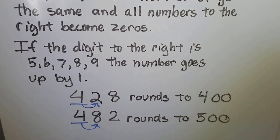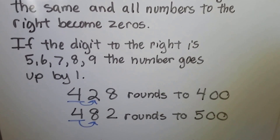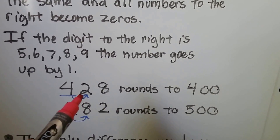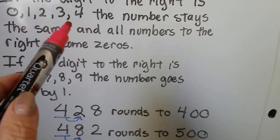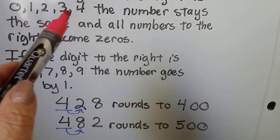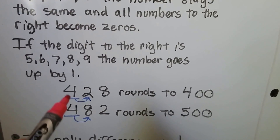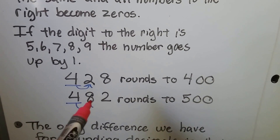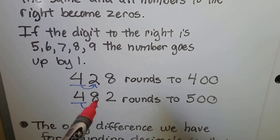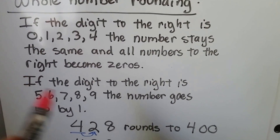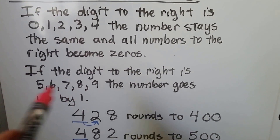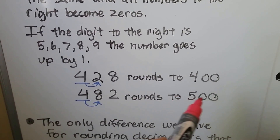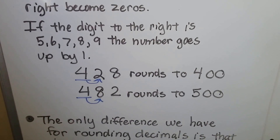So we have 428. If we're rounding to the hundreds place, the 2 is telling the 4 to stay the same, because it falls in that category. So it rounds to 400. In this case, the 8 is in the next group, so it's going to tell it to go up by 1. So the 4 becomes a 5, and then the remaining digits turn into zeros. So we have 500.